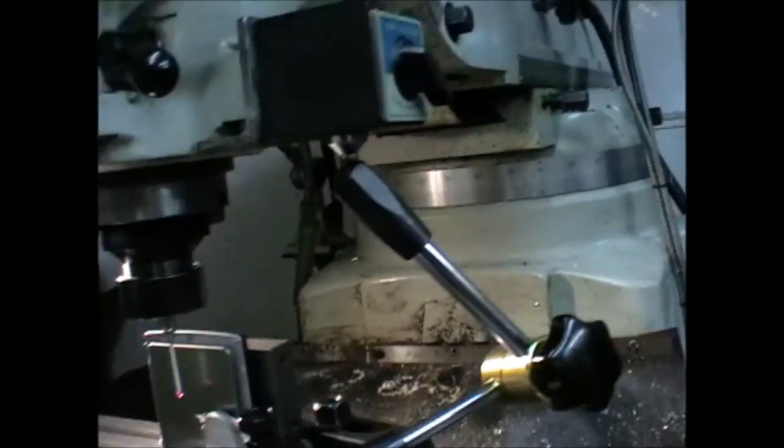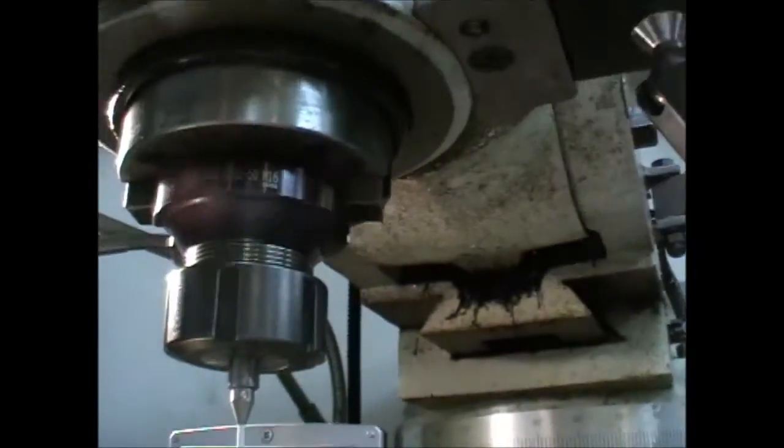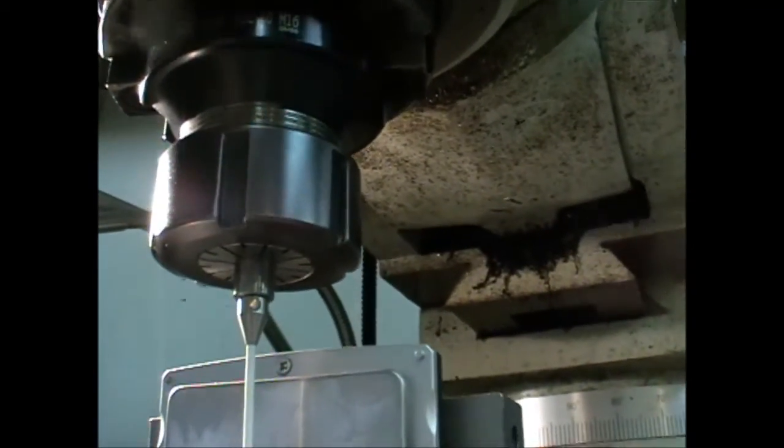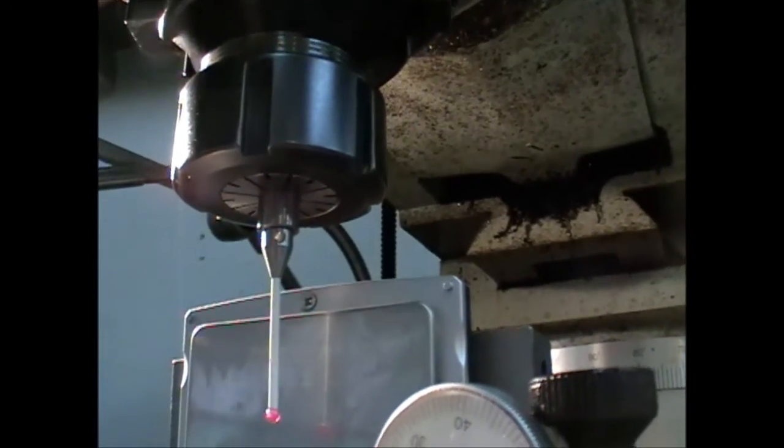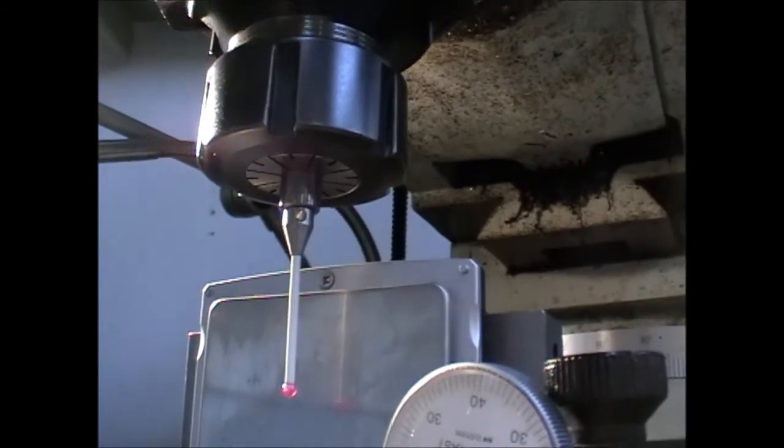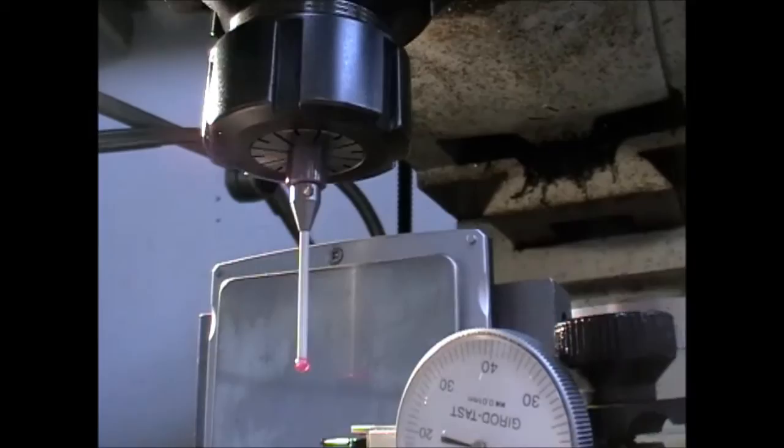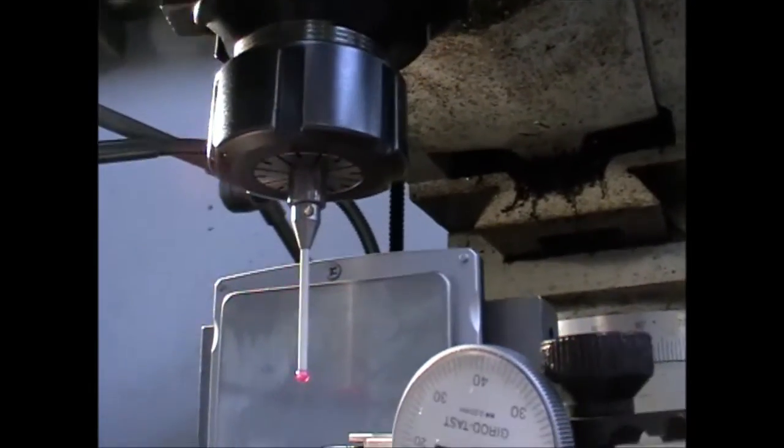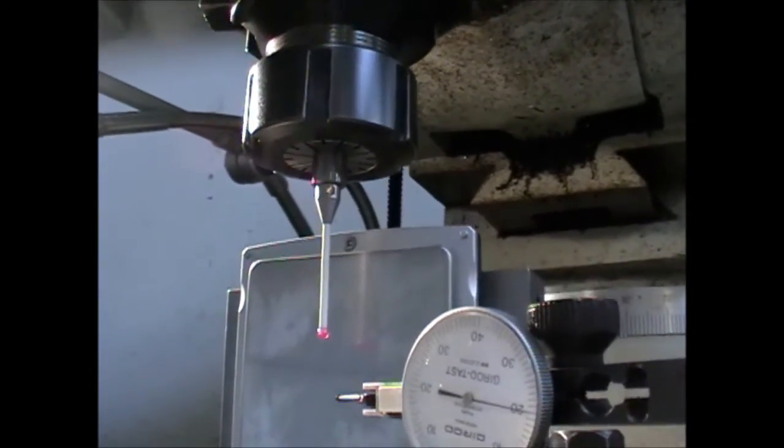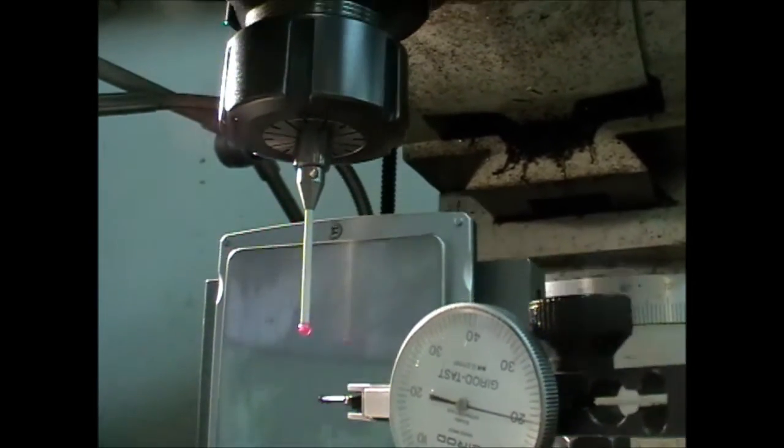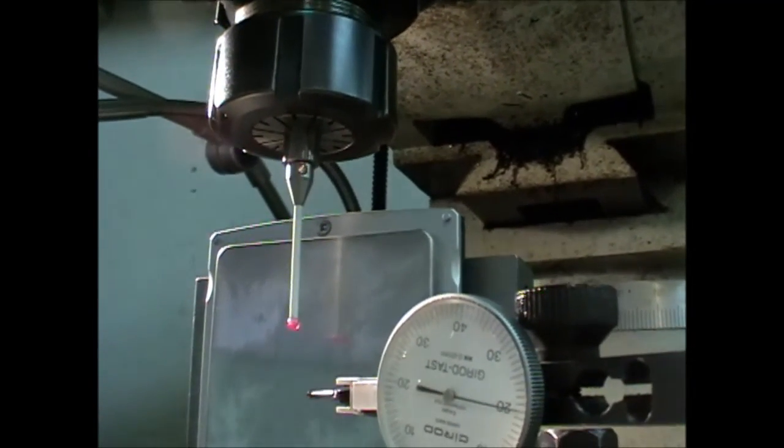One thing I didn't mention was how the stylus is now mounted. I've just cut a thread in the end of a piece of 3/8 steel and screwed it into the end, which is held in an ER-32 collet chuck. So you can see it's very rigidly held now, and there'd be very little flex occurring above the top of the stem.